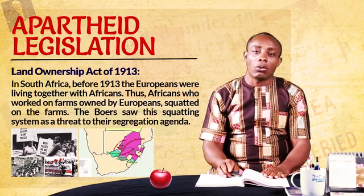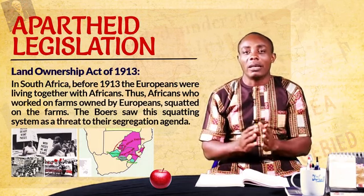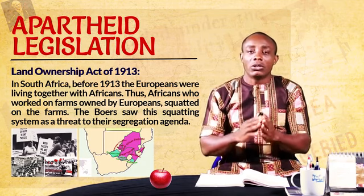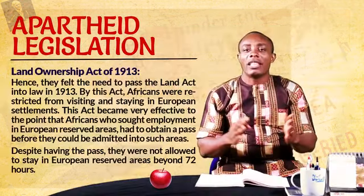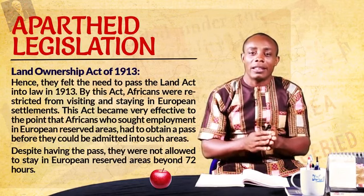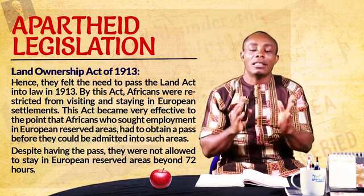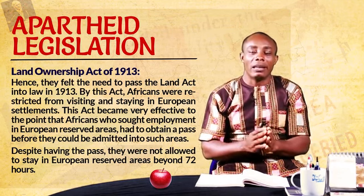The Land Ownership Act was passed into law in the year 1913. By the provisions of this act, there was segregation between settlements in South Africa. Africans were banned or forbidden to live side by side with the Europeans. Before this time, Africans were living side by side with the Europeans, especially on the farms. Those who were working for the Europeans normally squatted on the farms with permission. But as this law was introduced, they were banned from living alongside the Europeans. Furthermore, they were required to carry what was known as a pass — just like an ID card that permits you to move or enter settlements occupied by the Europeans.